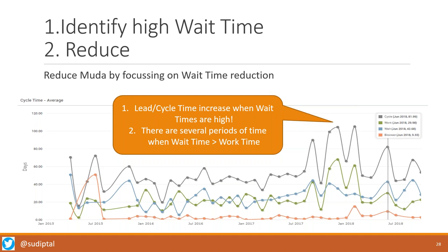You can see from this example that whenever wait times increase, lead times obviously increase correspondingly — if cards are spending a lot of time waiting, the lead time on those cards keeps increasing. So higher lead times than what you might mentally expect often indicates more wait time than you would like in the system.